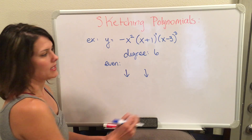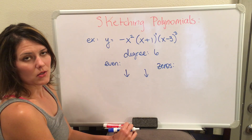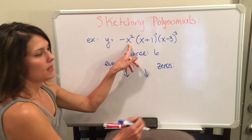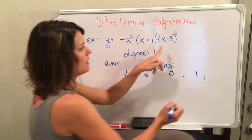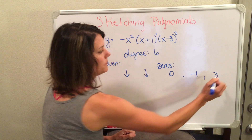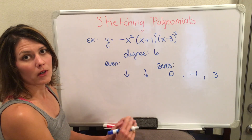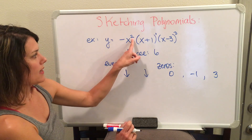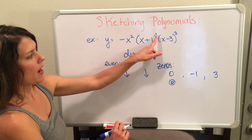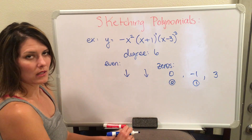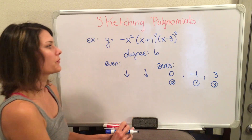Next I'm going to find my zeros. Since this is already factored, I set each factor equal to zero and solve. The factor x squared equals zero at zero. X plus one equals zero at negative one. And x minus three equals zero at three. So I have three total zeros. Now I'm going to check the multiplicity by looking at the power on each factor. At zero, the power is two — multiplicity of two. At x plus one, the power is one — multiplicity of one. And at x minus three, the power is three — multiplicity of three.